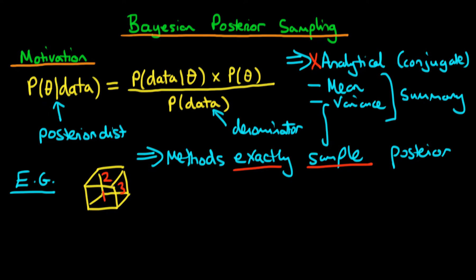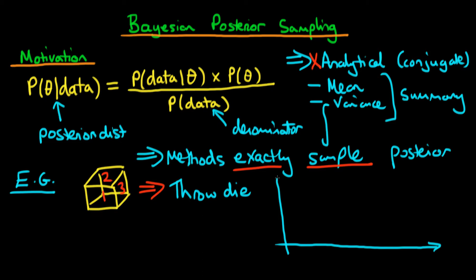A die is a cube which has written on its various sides the numbers one through six. Let's say beforehand, before we actually throw the die, we have no idea what the probability is of obtaining any particular number. So how could we actually gain some insight into what the probability of obtaining each of those numbers is? Well, it's pretty intuitive — we could just throw the die. In other words, we could take a sample from the distribution represented by throwing the die. And if we were to throw the die a large number of times, we might obtain some sort of frequency distribution across all the potential numbers which could come up on the die.